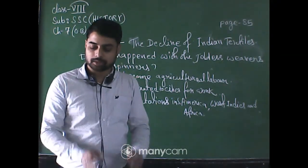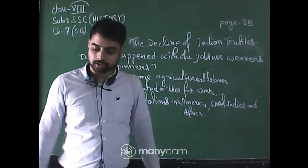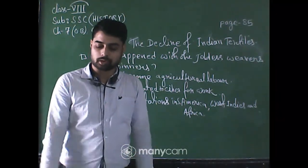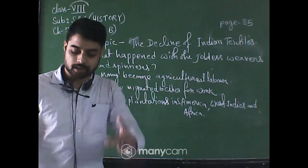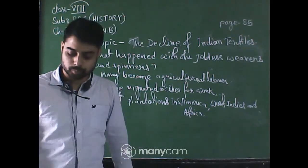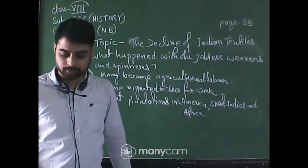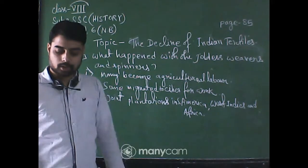In this context, Ahmedabad is in Gujarat; Bombay, Sholapur, and Nagpur are in Maharashtra; and Kanpur is in UP — Uttar Pradesh, at that time called United Province.